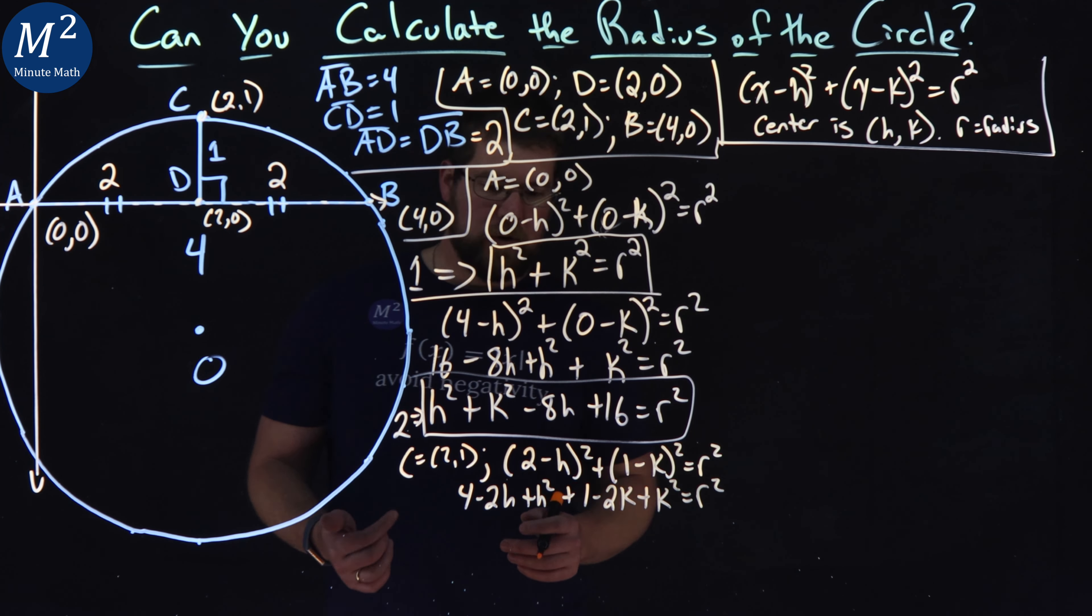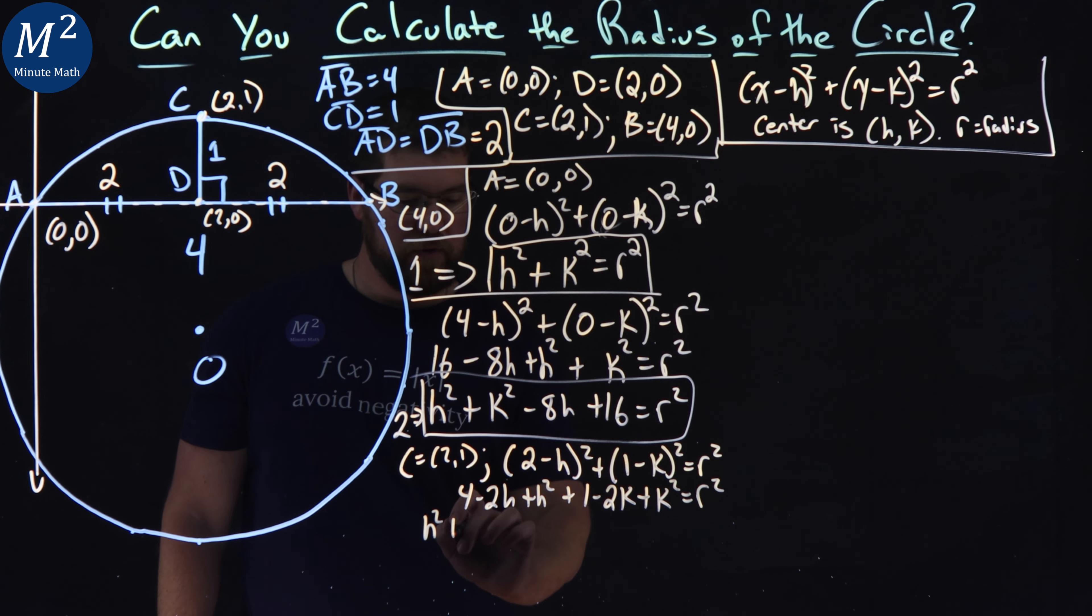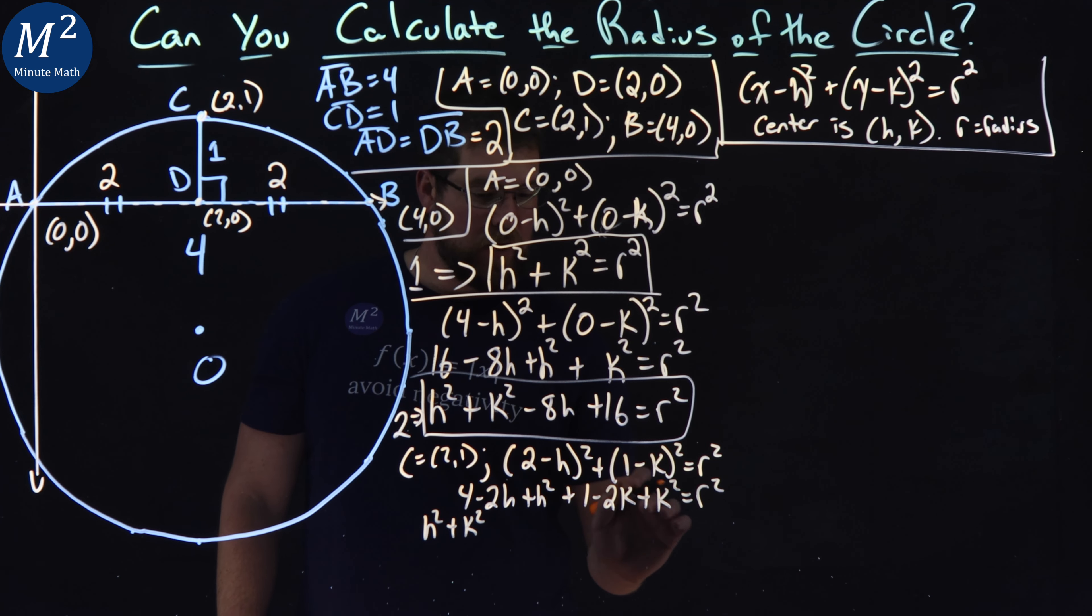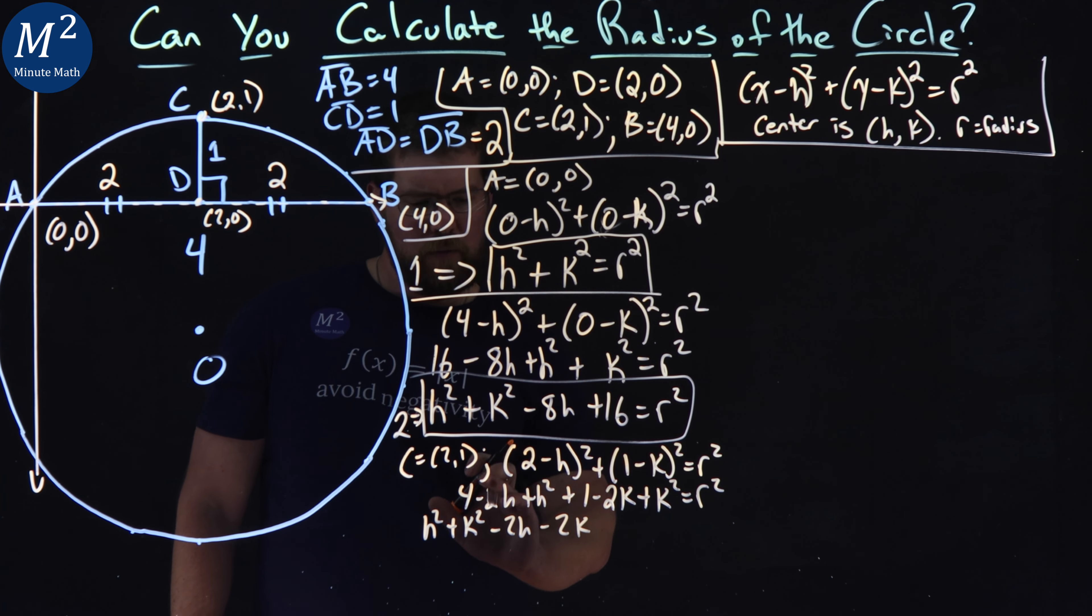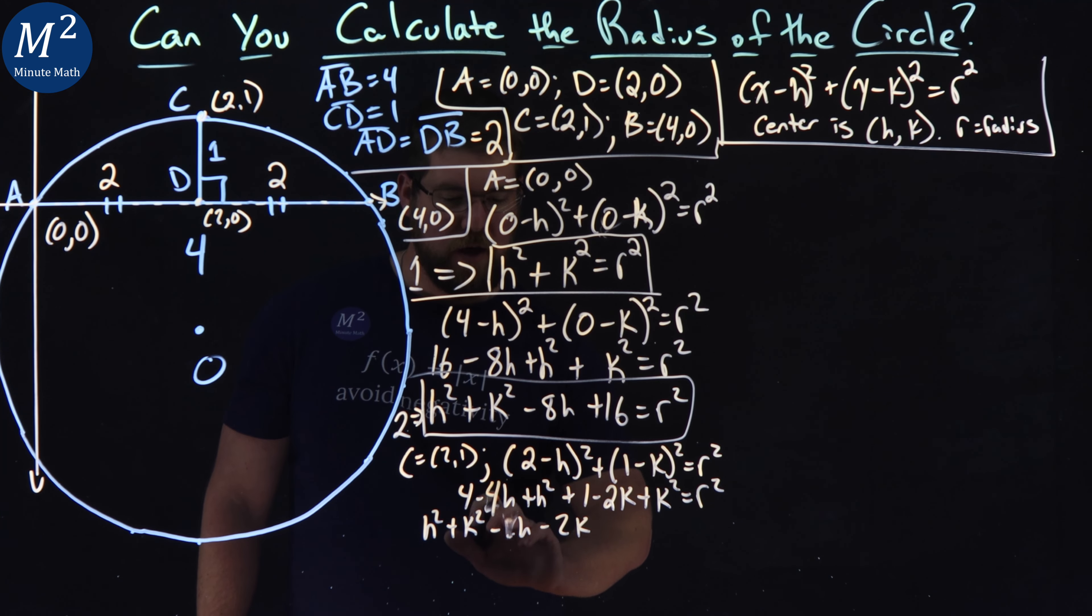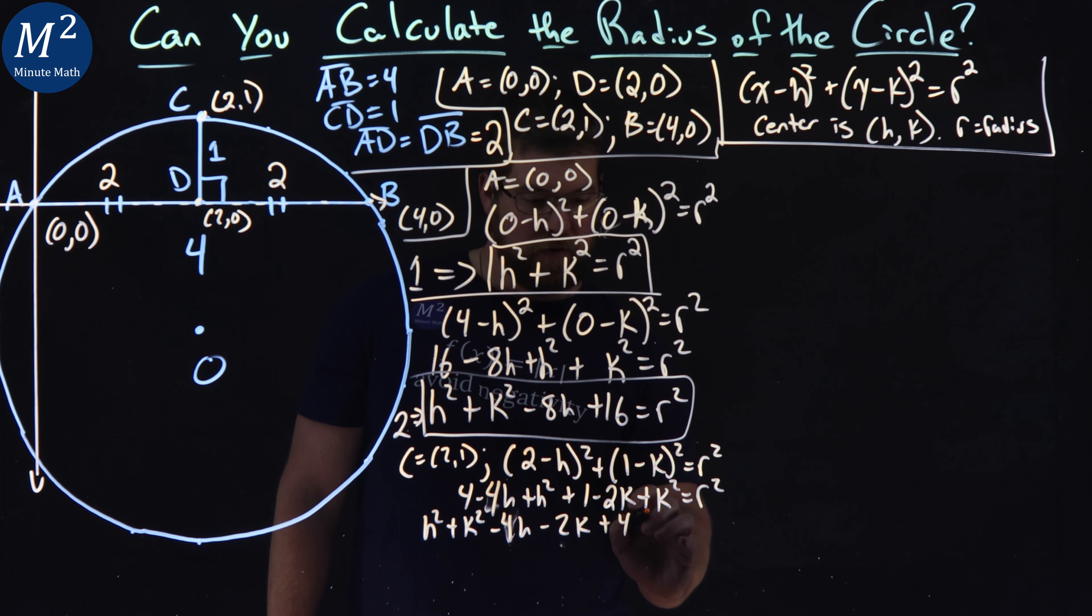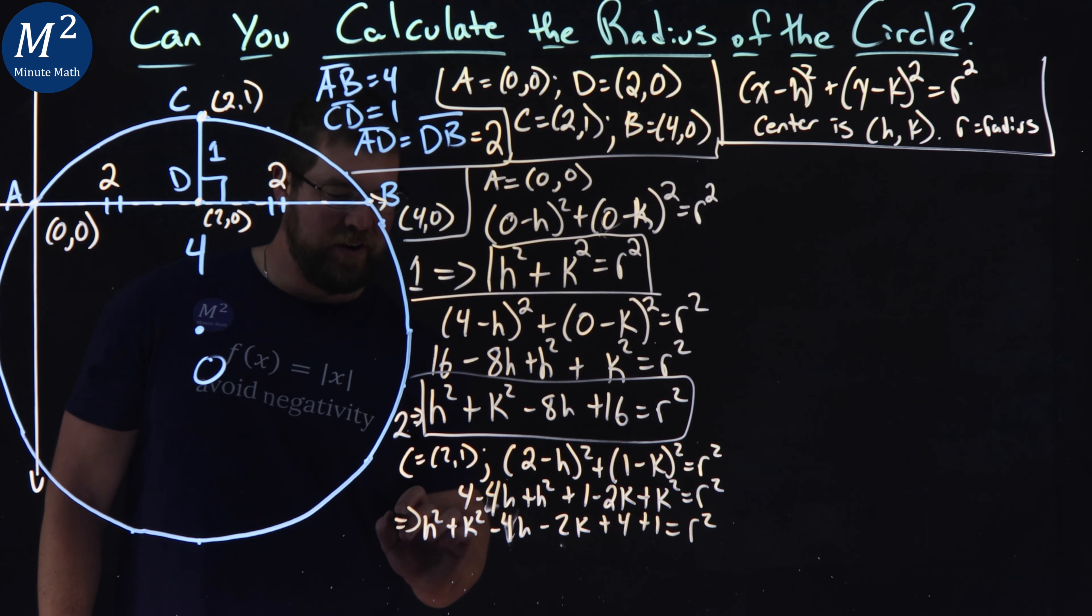From there, we're multiplying this out again, like we did before. Two minus H all squared is four minus 2H plus H squared plus same idea here. One minus K all squared is one minus 2K plus K squared is equal to R squared. Now I rearrange this to put my H and K's first. So I have H squared plus K squared rearranging this, make sure I got them all.